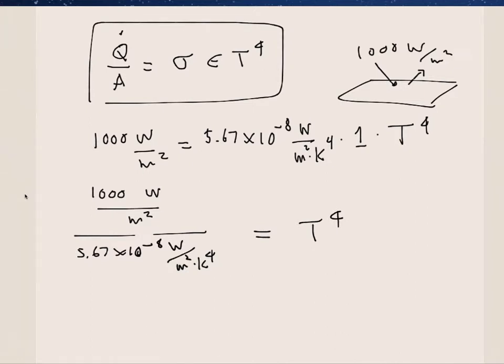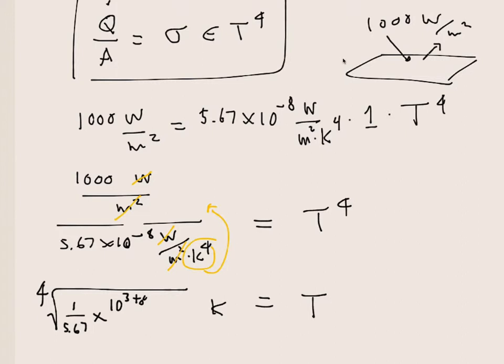And just to check the units, we know watts per meter squared cross out here, we know this Kelvin is going to be up on the top. So what we have here is the fourth root of whatever this value is. I guess it's 1 over 5.67 times, I guess we have 10 to the 3 plus 8, so 10 to the 11th. So I forgot to write this 4 here.